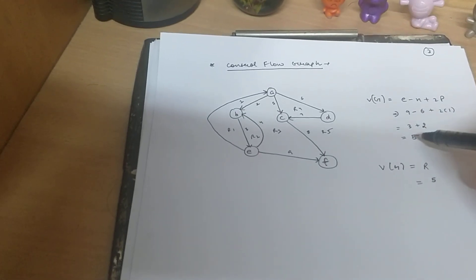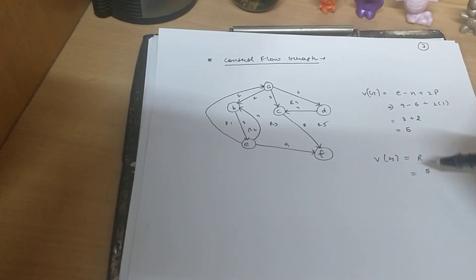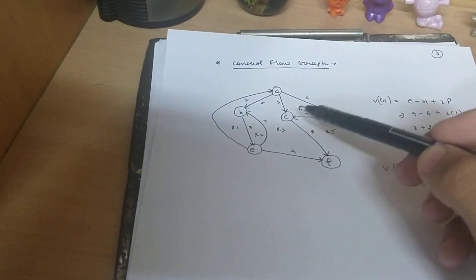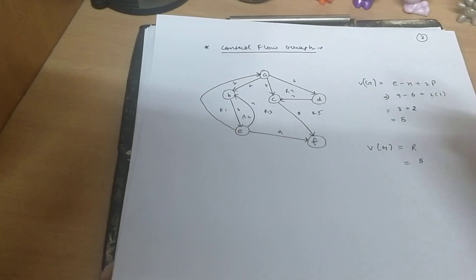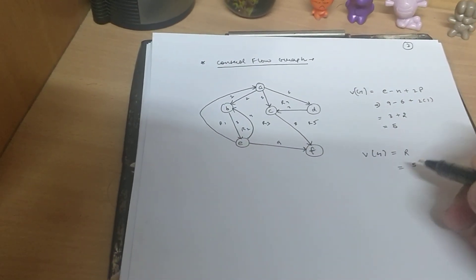By calculating this we will have the answer as 5. And to the number of regions formula, there is number 1 region, number 2 region, number 3, number 4 and number 5. There are 5 regions in this totally. So we have Cyclomatic complexity as 5.